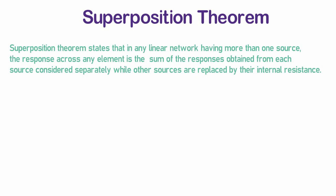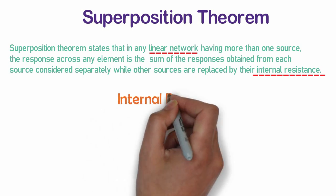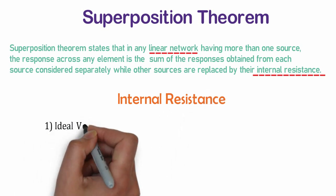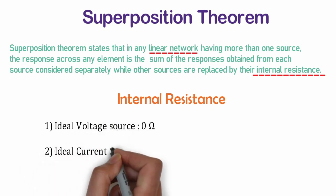Friends, here we need to focus on term linear circuit and internal resistance. We are aware about internal resistance of ideal sources. For the ideal voltage source, internal resistance is zero ohm while for the current source it is infinite ohm.